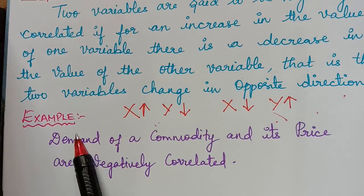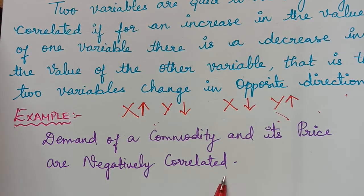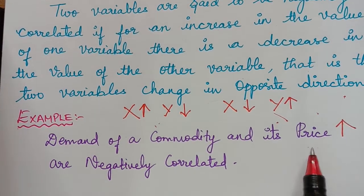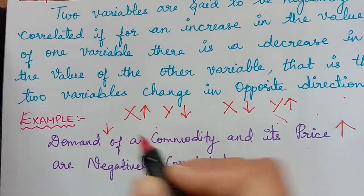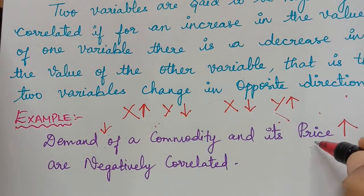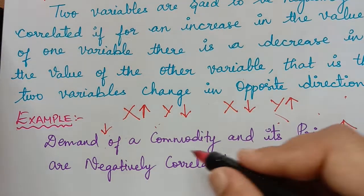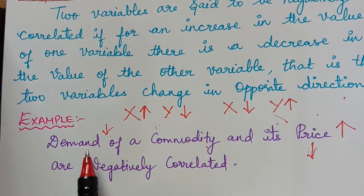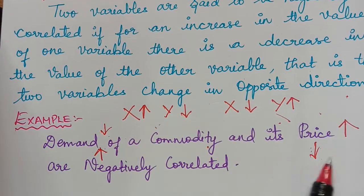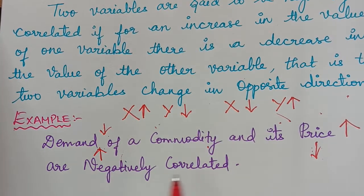An example of negative correlation is the demand of a commodity and its price — they are negatively correlated because when the price increases, the demand for the commodity decreases. When the price becomes high, demand will obviously go down. Conversely, if the price decreases, more people will start to demand that commodity, so demand increases. They change in opposite directions, making them negatively correlated.